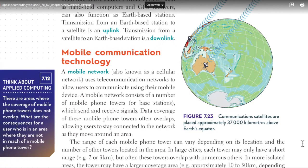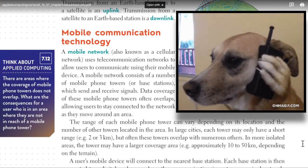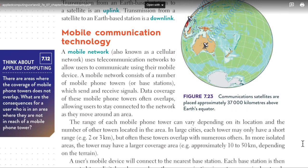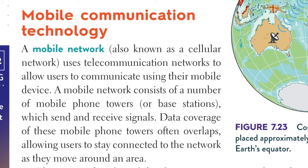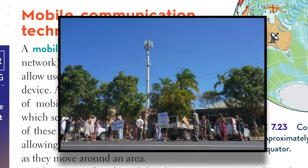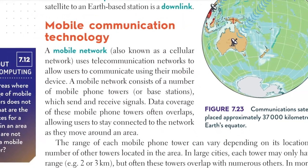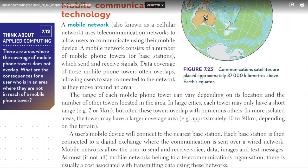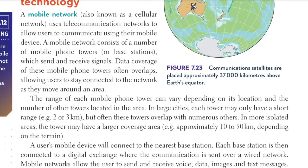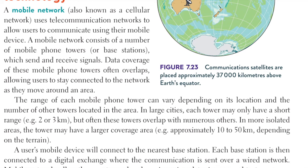A mobile network, also known as a cellular network, uses telecommunication networks to allow users to communicate using their mobile device. A mobile network consists of a number of mobile phone towers or base stations which send and receive signals. The data coverage of these mobile phone towers often overlaps, allowing users to stay connected to the network as they move around an area. The range of each mobile phone tower can vary depending on its location and the number of other towers in the area.